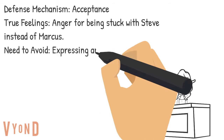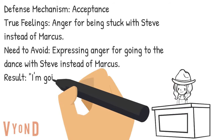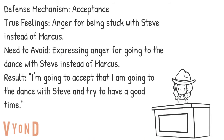Sally is eventually able to tap into another mature defense mechanism called acceptance. She is upset about not going to the dance with Marcus and she feels stuck with Steve, but decides that rather than expressing anger, which is inappropriate, she is going to accept the situation and try to have a fun time at the dance with Steve.